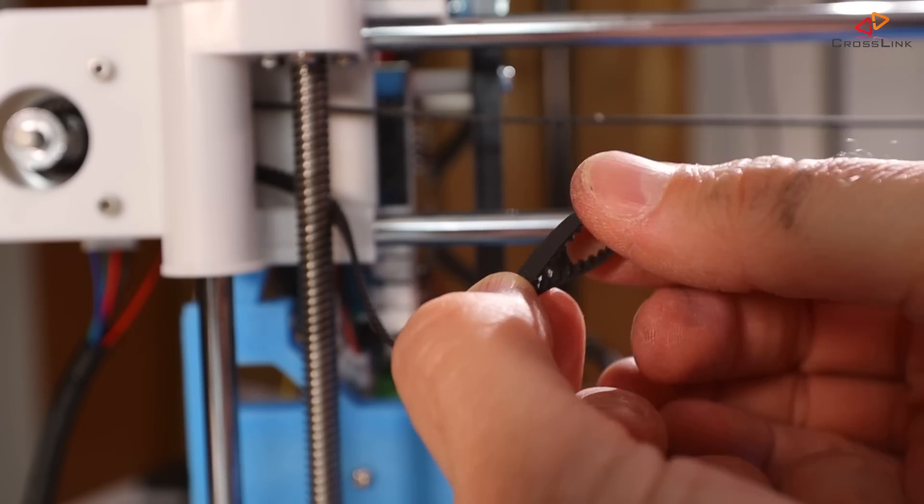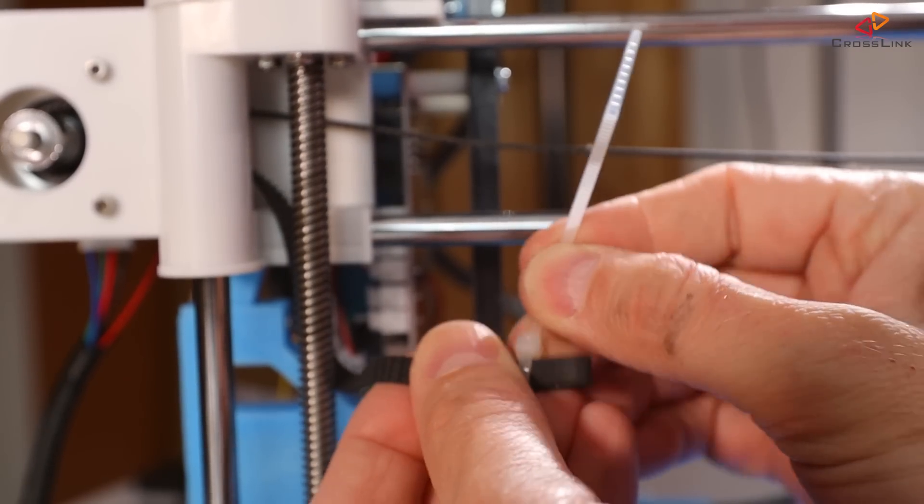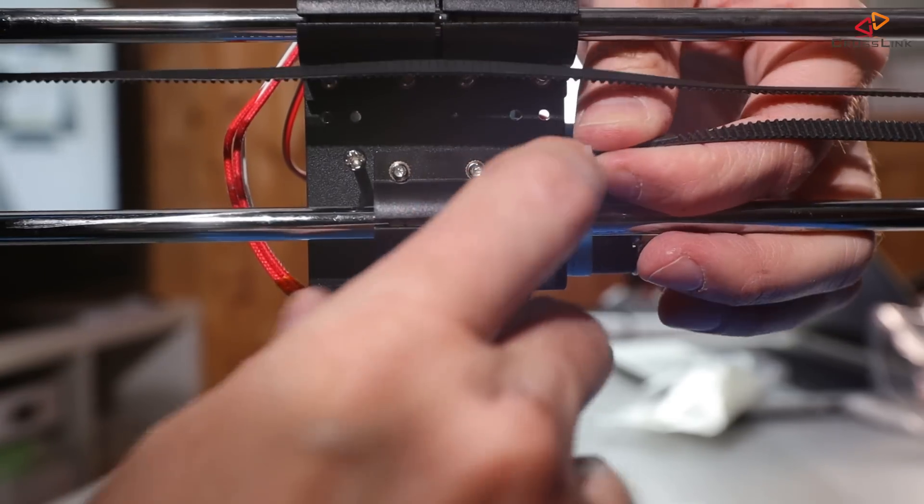Next, form a loop with the belt teeth face to each other and fix it with a zip tie so there is an opening large enough to slip it over the carriage's belt attachment screw.